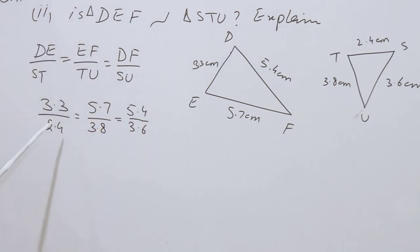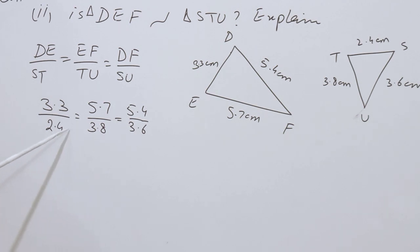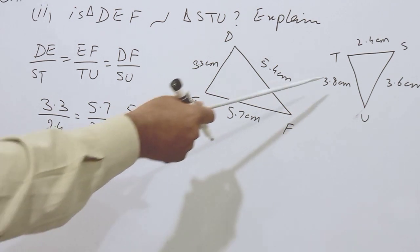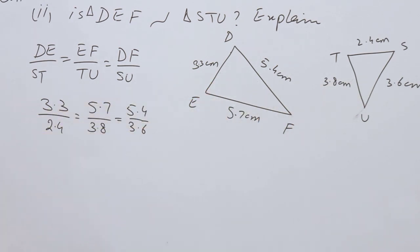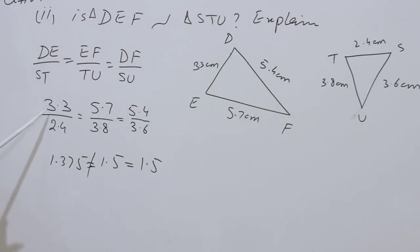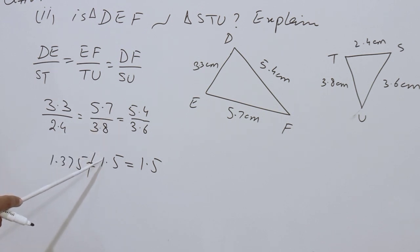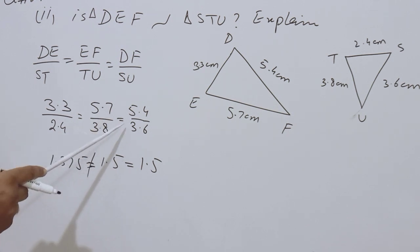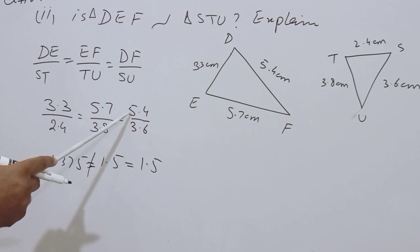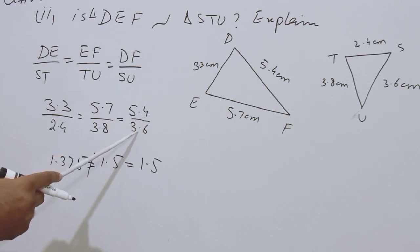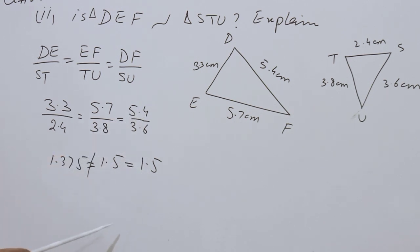Now students, we will use a calculator to simplify all the fractions, and if their answers are equal then the triangles will be similar, otherwise not. When you apply 3.3 over 2.4 we get 1.375; 5.7 over 3.8 gives 1.5; and when we divide 5.4 by 3.6 we also get 1.5.